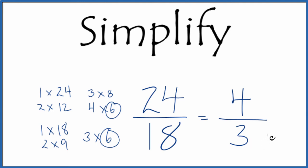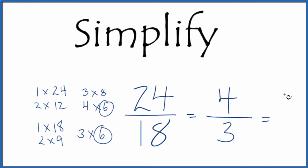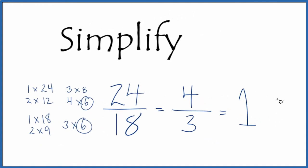This is an improper fraction. We could change it to a mixed number if we wanted to do that. 3 goes into 4 one time. We have 1 left over, so 1 third. So 1 and 1 third, that's equal to 4 thirds.